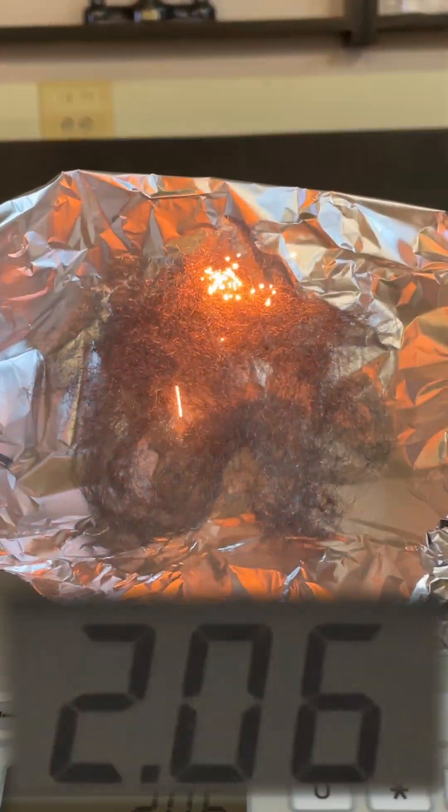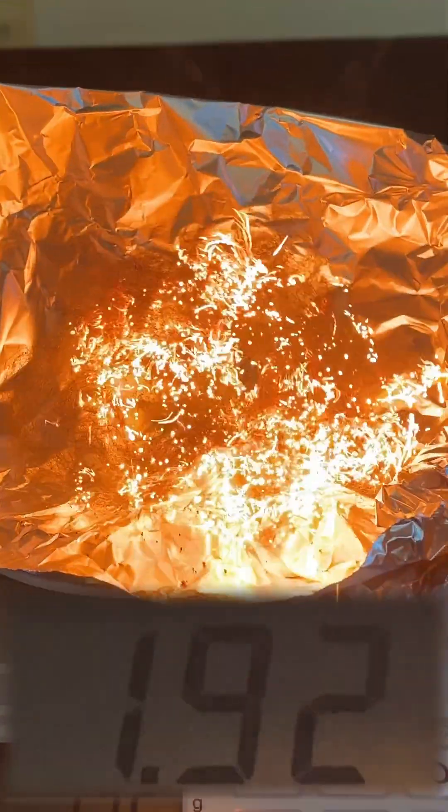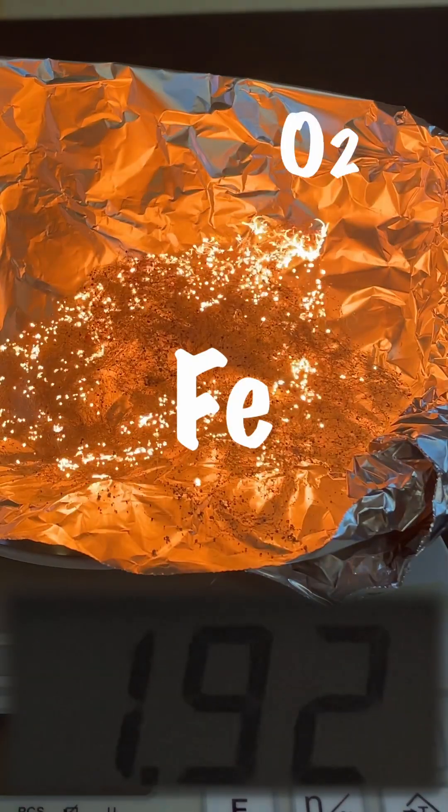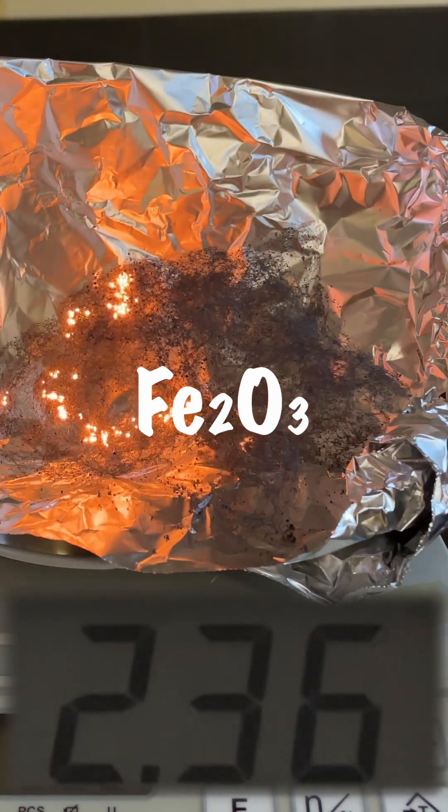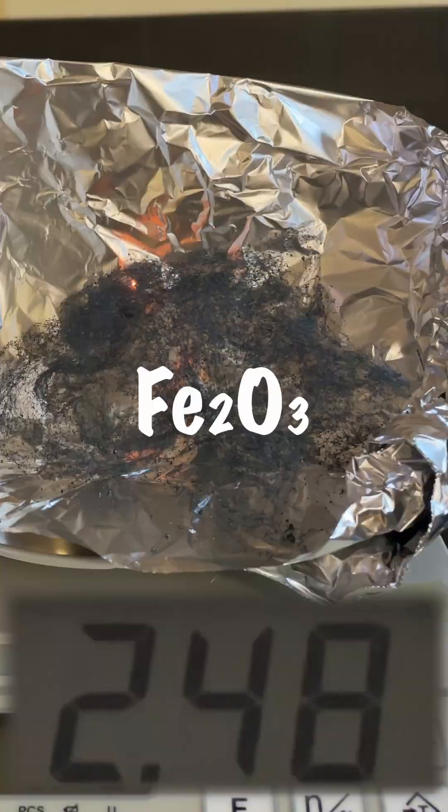A two-gram sample of steel wool on a scale will seem to lose mass, but that's just the buoyant hot air tricking us. It quickly gains mass as oxygen reacts with iron, making more mass of iron oxide. It's like fast rusting.